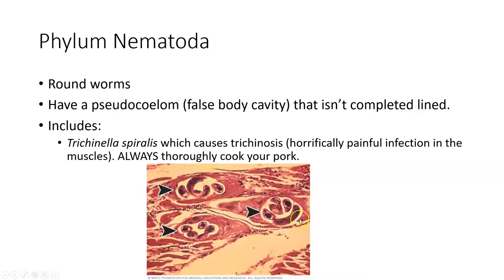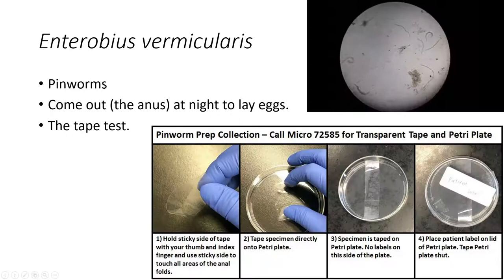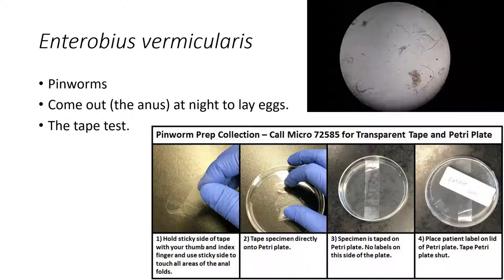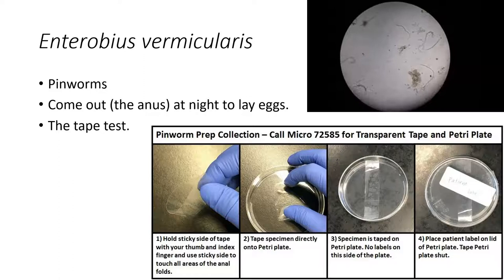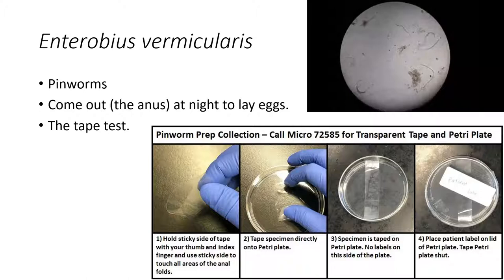Trichinella spiralis causes trichinosis, typically from eating undercooked pork. The worms travel through the digestive system wall and encyst in skeletal muscle like biceps and quadriceps, causing pain with every movement. Pinworms are very common in school-aged children because children have poor hygiene — they scratch, get eggs under their fingernails, and then transfer eggs to their mouth, nose, or toys. Other children lick the toys and become infected. Pinworms are extremely common in daycares and elementary schools.